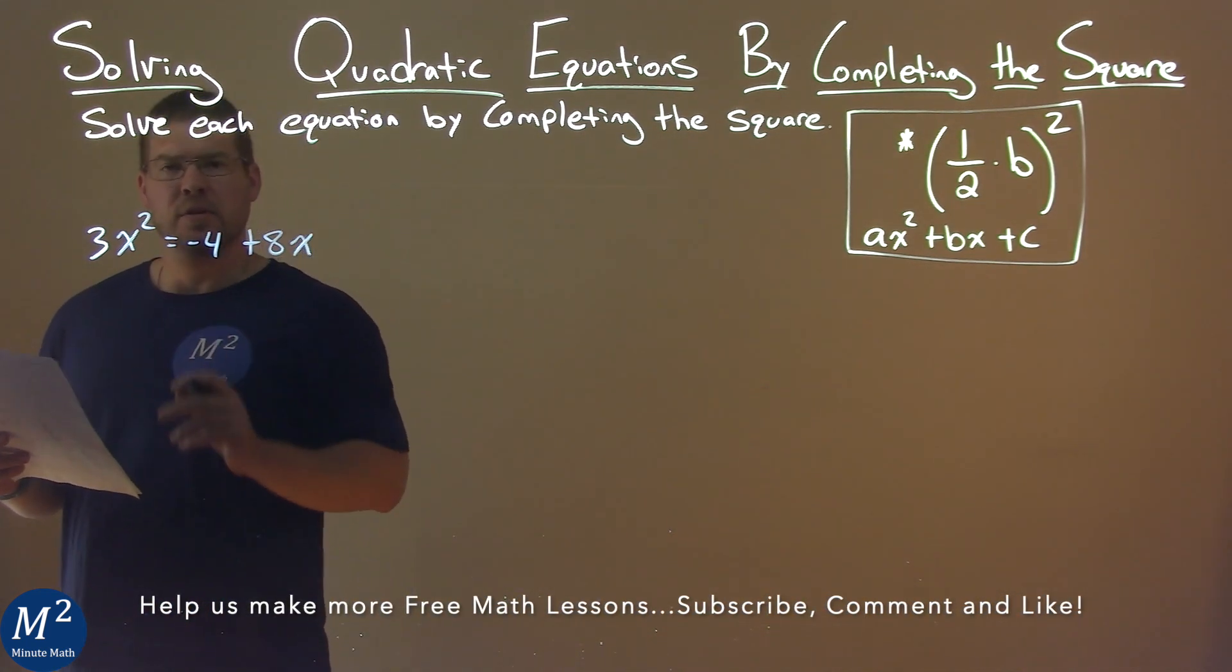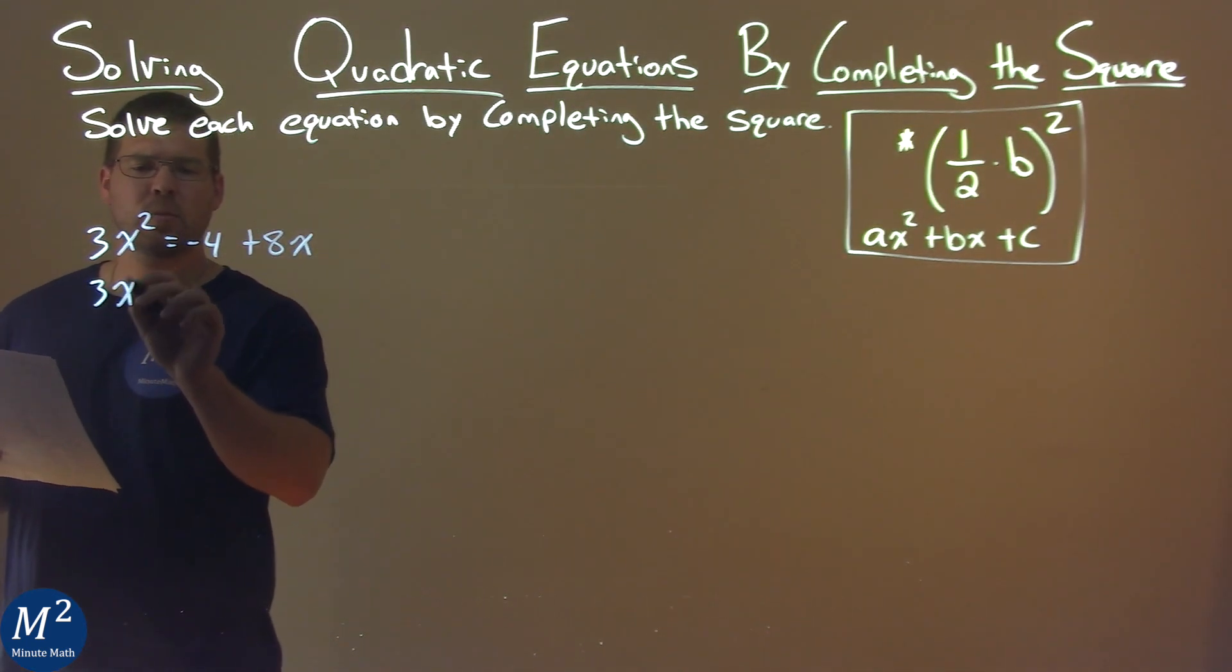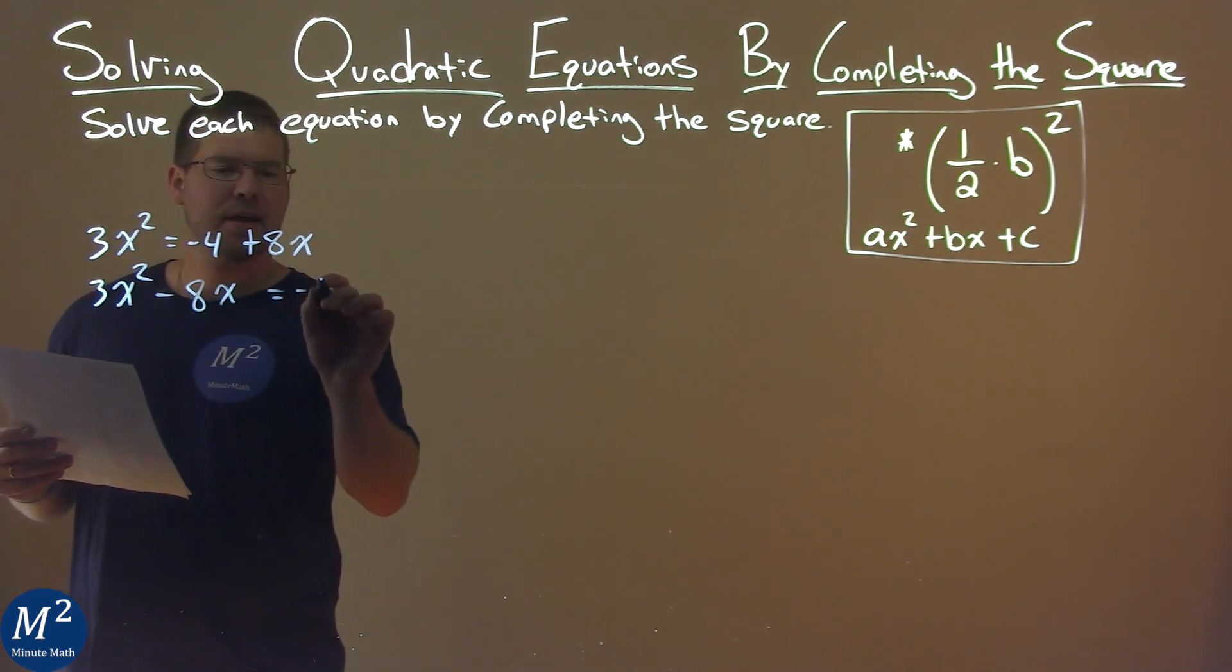First thing I'm going to do is bring the 8x over to the left. So we have 3x² - 8x = -4.